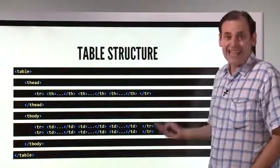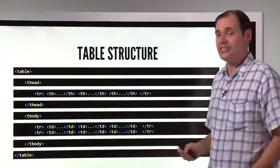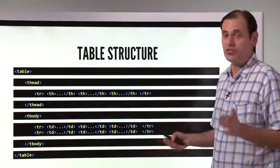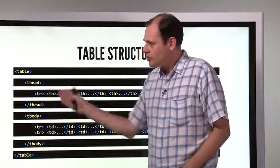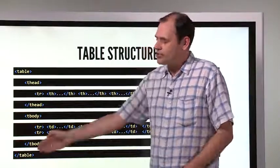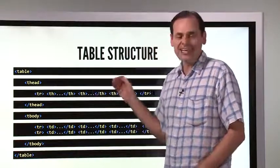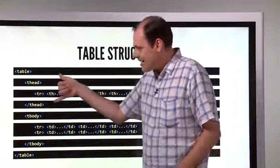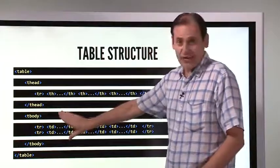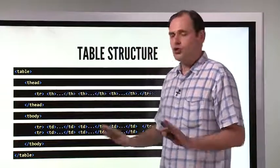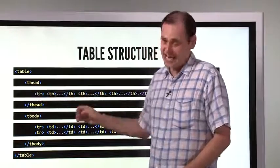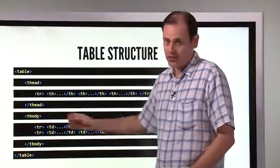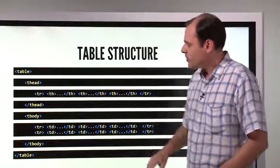We want to do a table. Obviously a table goes in the body area, where everything that you see goes, and your basic table structure looks like this. You've got table slash table, and then inside the table you've got a header area and you've got a body area. Just to make sure it's not confused with the main header and body area, we have thead and we have tbody.